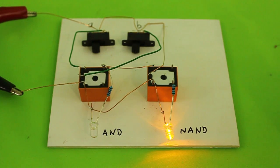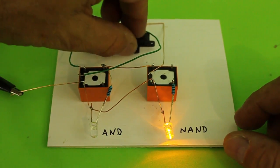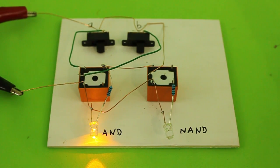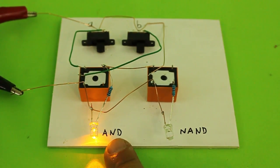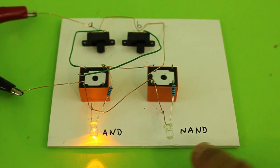Now the last configuration which is 1.1. And here you can see that the AND LED is ON. And the NAND which is the negative, it is now OFF.